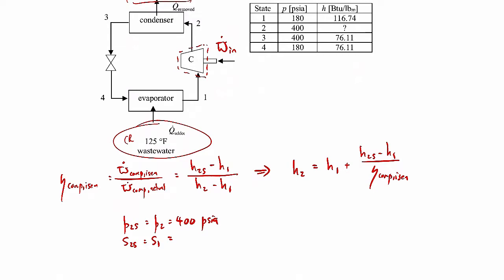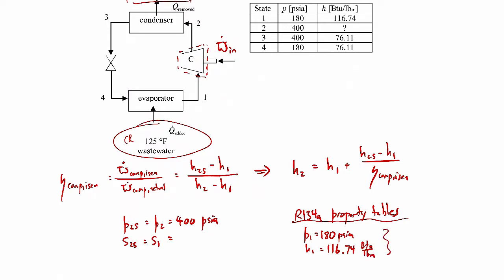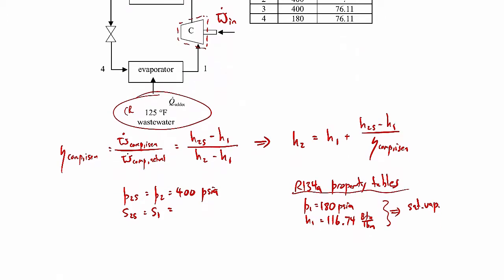This is refrigerant 134A, so looking in the property tables: for state 1, P1 is 180 PSIA and H1 is 116.74 BTUs per pound mass. Looking through the property tables, this turns out to be a saturated vapor state. The tables used are from the Moran and Shapiro textbook. The corresponding temperature at state 1 was 117.74 degrees Fahrenheit, and S1 is 0.2154 BTUs per pound mass degrees Rankine.